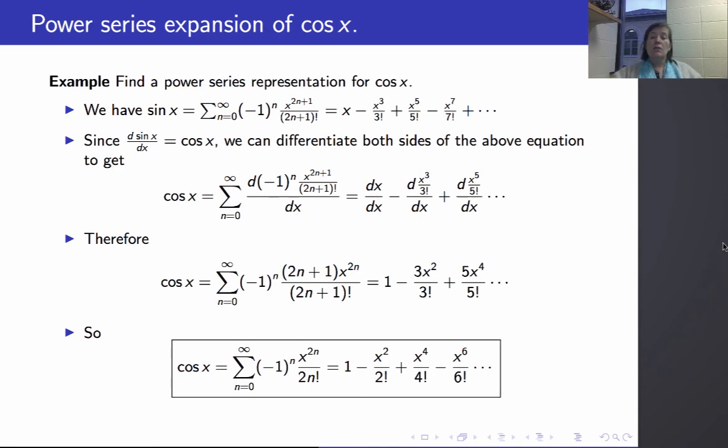Minus x to the 6 over 6 factorial, which is the sum from 0 to infinity of minus 1 to the n, x to the 2n over 2n factorial.